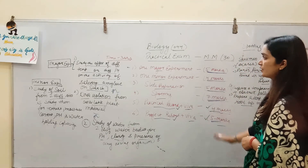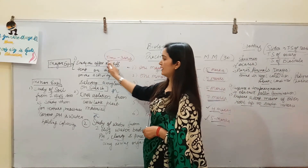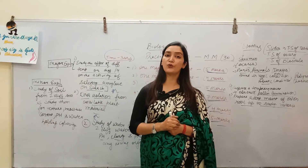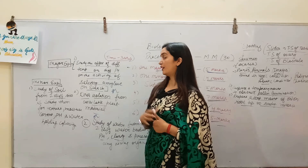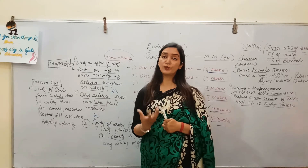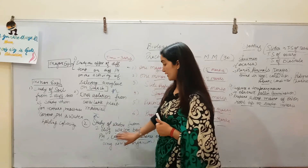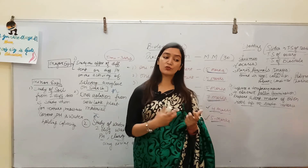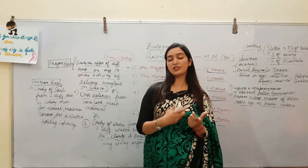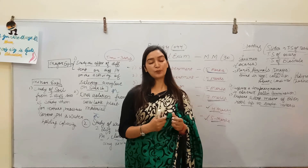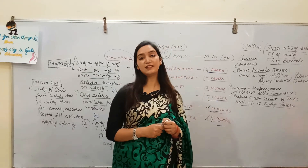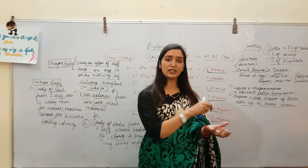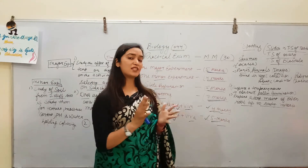The practical record is worth 4 marks and the project report with viva is worth 5 marks. This practical exam will be of three hours and for 30 marks total. Make sure your practical file is complete, covered properly, and your project file is ready. Prepare a strong viva for the topic you have selected for your project. In spotting, be very careful — if you identify something wrong, you will not get marks, so the writing part is very important.